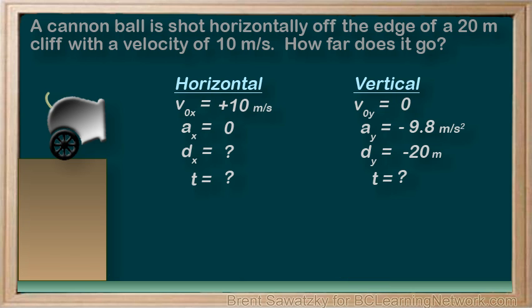Since we know that the horizontal displacement is dependent on the cannonball's time in the air, let's start with the vertical and determine our time t. Referring to our kinematics equations and our list of knowns and unknowns, we can see that this would be a great equation to use.